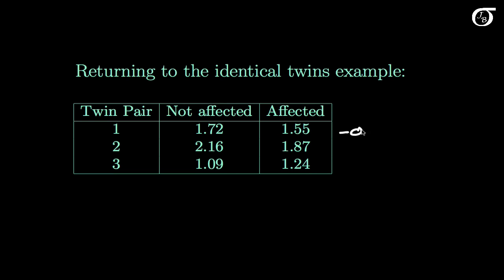But I'm going to take these differences 1.55 minus 1.72, or minus 0.17, 1.87 minus 2.16, minus 0.29, and 1.24 minus 1.09, which is 0.15.